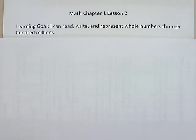Our learning goal today is I can read, write, and represent whole numbers through hundred millions. So our last lesson we only went with our place value up through the thousands. So we're going to go through hundred millions today and really look and see what those numbers look like and how do we read, write, and represent them.